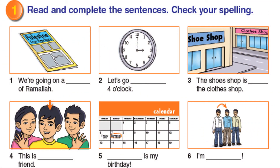Now period 8. Exercise 1: Read and complete the sentences — check your spelling. Look at the pictures. We are going to use the unit vocabulary to complete these sentences. Look at the picture and complete the sentence — you have five minutes. Number one, for example: we are going on a tour of Ramallah.